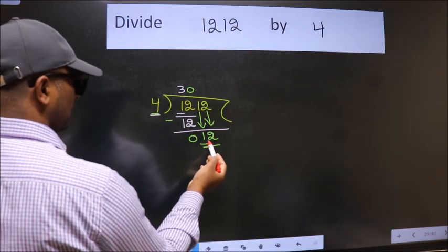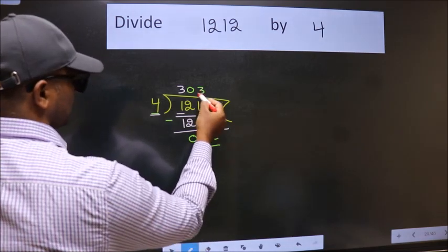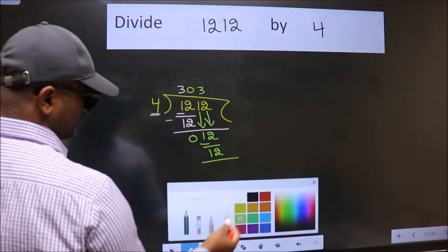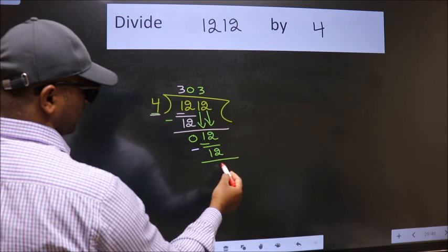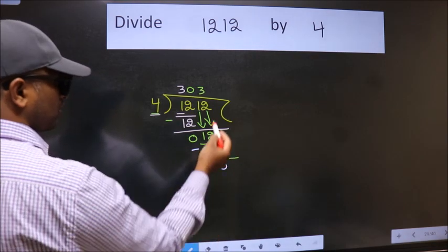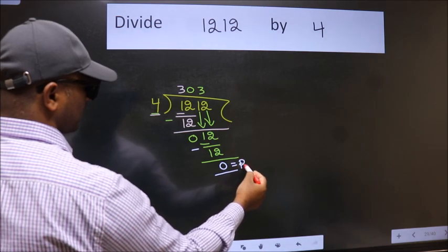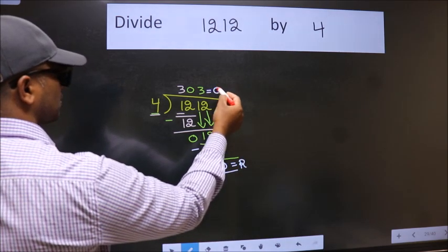When do we get 12 in 4 table? 4 times 3 is 12. Now we subtract. We get 0. No more numbers to bring down, so we stop here. This is our remainder and this is our quotient.